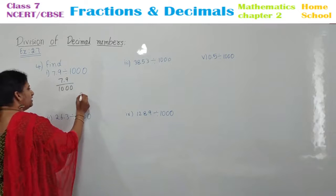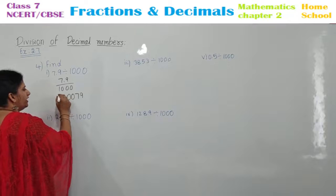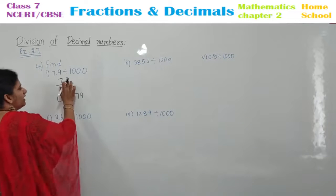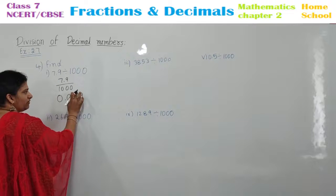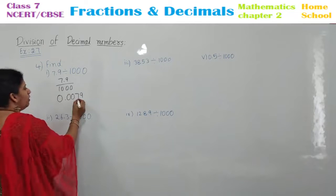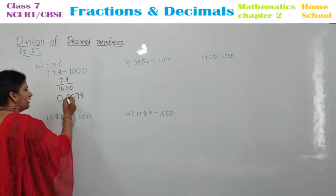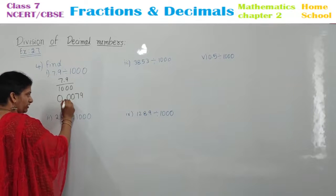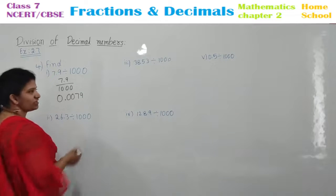That means: 9, count 1, 2, 3 — put the point. This is your answer. Write the 9 here and start counting from here. The decimal point should be shifted after three digits. Count 1 — nothing there, so write 0. Count 2 — write 0. Count 3 — after these three values, put a point. Before the point, you need to put one more 0. This is your answer.